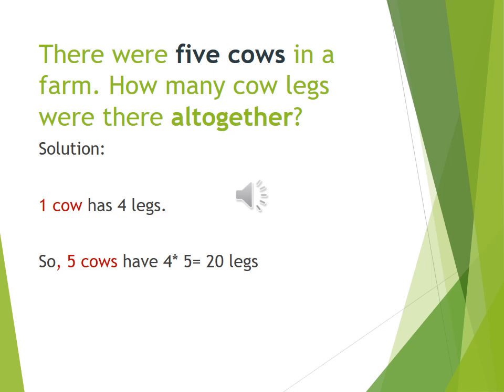There were 5 cows in a farm. How many cow legs were there all together? 1 cow has 4 legs. So 5 cows have 4 into 5 equal to 20 legs.